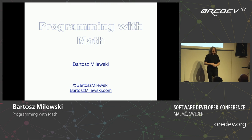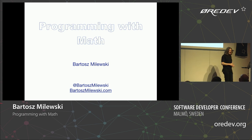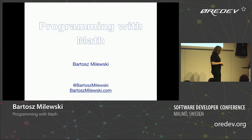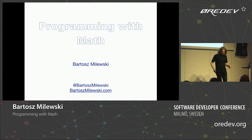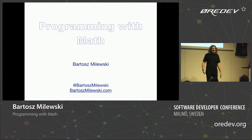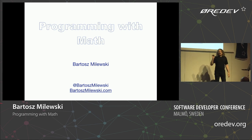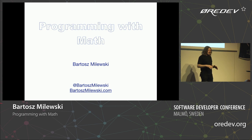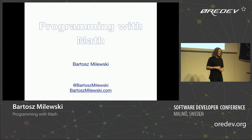The title of my talk is kind of nondescript: programming with math. When I got the invitation about half a year ago, I had to come up with a title and I wasn't sure what I would be interested in. I keep changing my interests, so I knew it would be mathematical. But what I'm going to talk about will be mathematics of type theory.